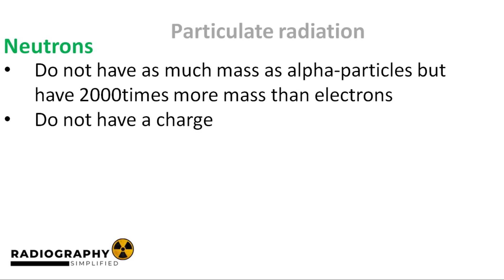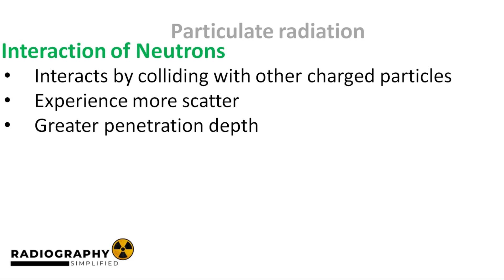Next up, neutrons. These do not have as much mass as alpha particles, but are 2,000 times heavier than electrons. They do not have a charge, so they cannot interact by coulombic interactions like alpha particles and electrons. Instead, they interact by colliding with other charged particles. These collisions lead to scatter and loss of energy. However, neutrons are relatively difficult to stop and possess a greater penetration depth than electrons, but not as great as x-rays.